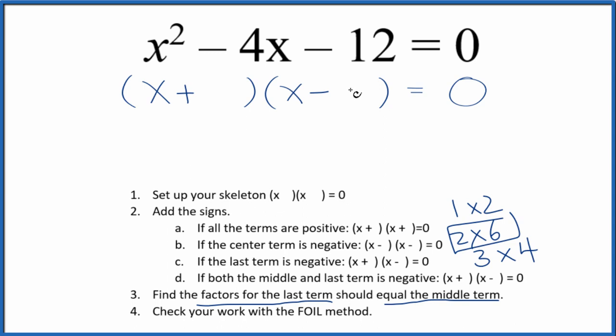The question is, do I put the 2 or the 6 here? Well, since I want the 12 to be negative, I'm going to put the bigger number here, 6 and then 2. That way I'll have x times negative 6, negative 6x, and then 2 times x is 2x. So that'll give me that negative 4x.